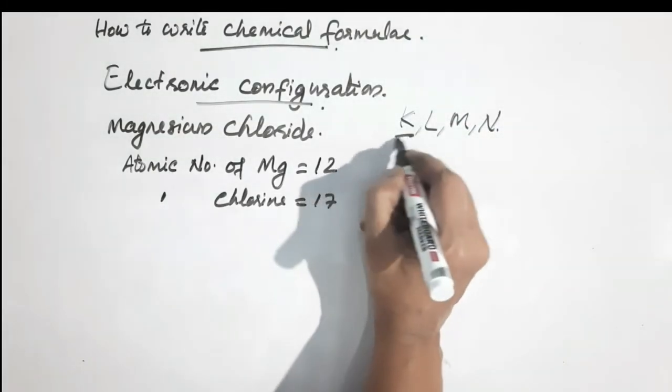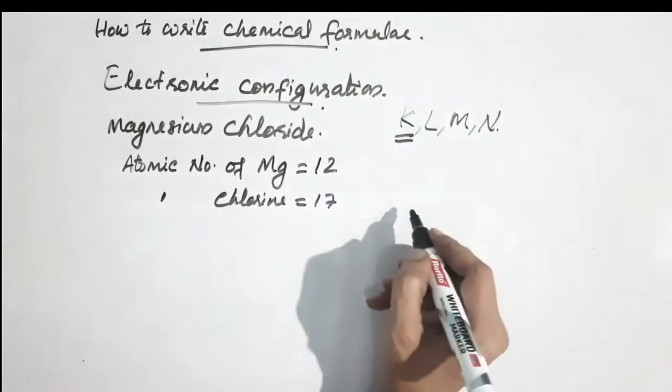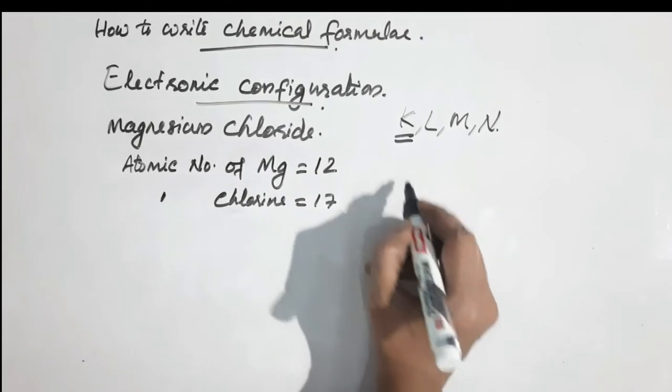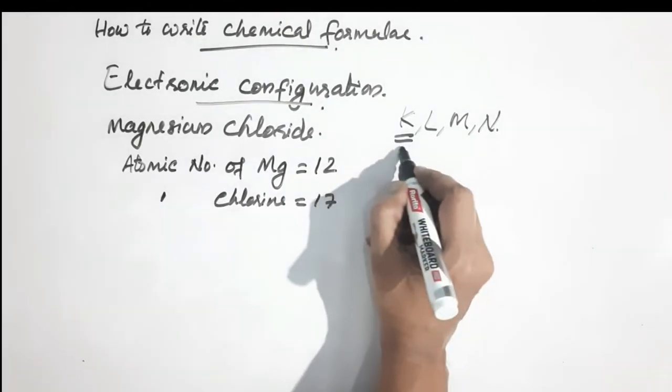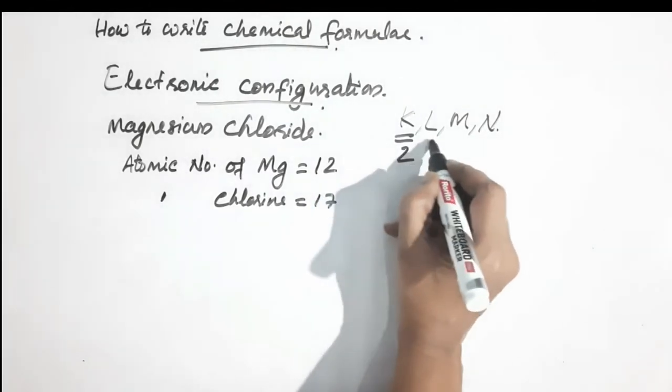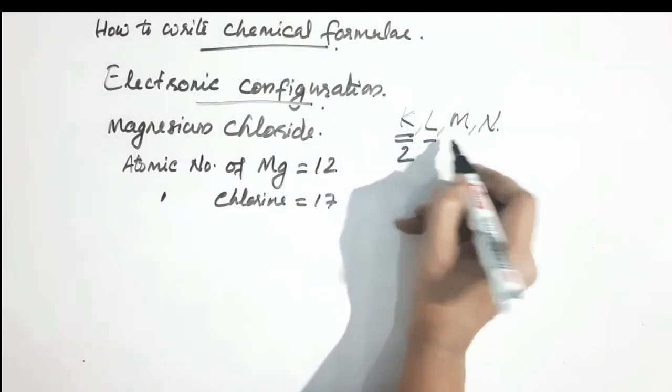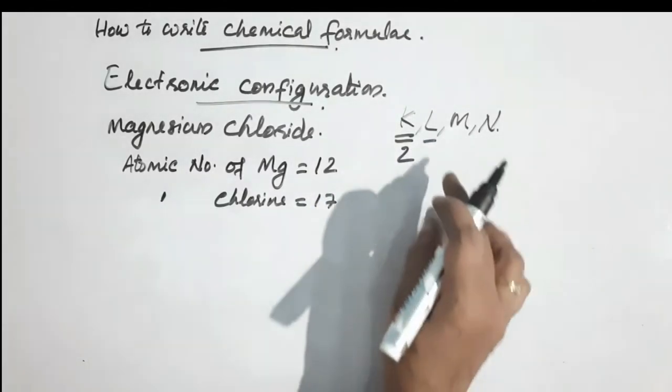In the first shell (K), we have 2 electrons. In the second shell (L), we have 8 electrons.